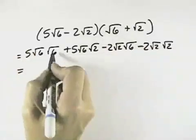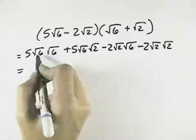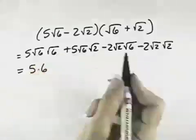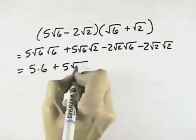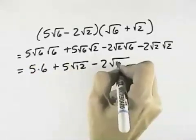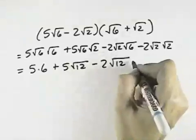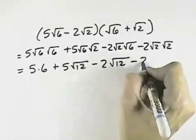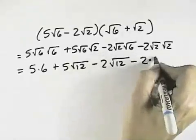So square root of 6 times square root of 6, square root of anything times itself is that number, so this will be 5 times 6. Plus 5 times the square root of 12 when I multiply 6 times 2 together, minus 2 times the square root of 12 when I combine the 2 times 6, and then minus 2 times the square root of 2 times itself will just be 2.